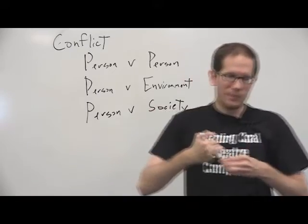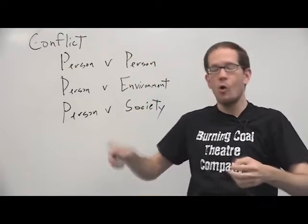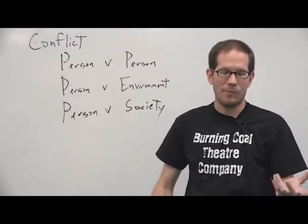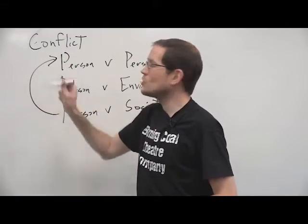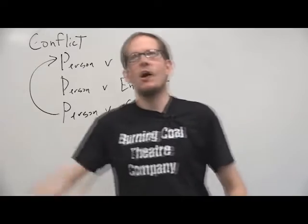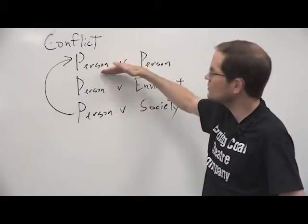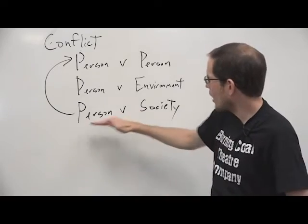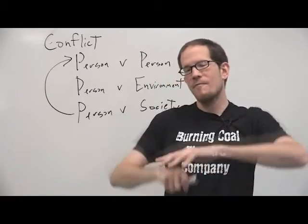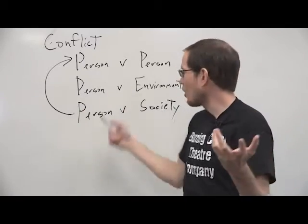You also have person versus society, where your protagonist is going up against something bigger than they are — something you typically can't touch, like fighting against an unjust law, an oppressive government, or what society thinks of a person. Often this conflict turns into a person versus person conflict, because you can't just have a character on stage saying 'I hate you, world' — who are they going to punch? There often needs to be a person who represents that society. For example, in the play Antigone, which is about a girl fighting against an oppressive government, there's a ruler named Creon who represents that government, so the conflict becomes with Creon.